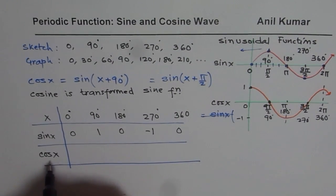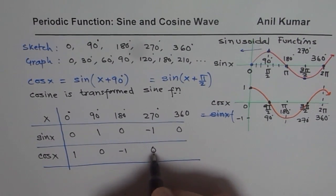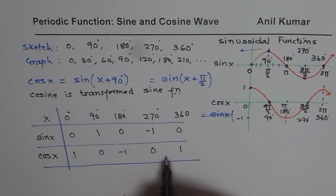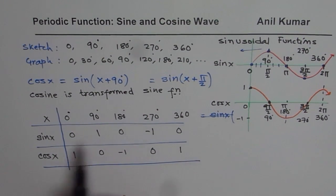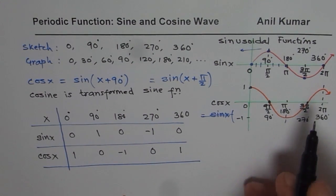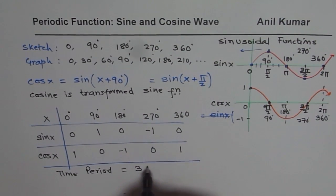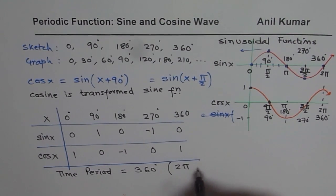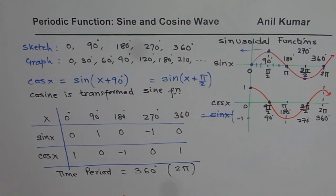For cosine x, it starts with the maximum, so the values at 0°, 90°, 180°, 270°, 360° are: 1, 0, -1, 0, 1. This pattern repeats after a time period of 360 degrees or 2 pi radians. Note that radians is a ratio, so we normally do not write the unit 'radians.' This makes clear what the sine and cosine functions are, what their period is, and how they are related.